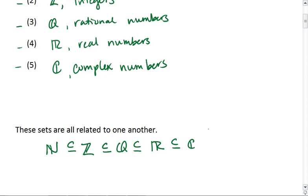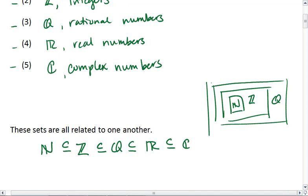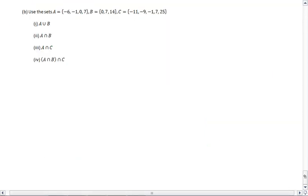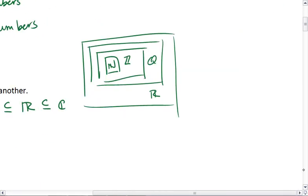Meaning, all of our natural numbers are also going to be integers, plus other numbers. All of our integers are also going to be rational numbers. All of our rational numbers will also be real numbers. And all of our real numbers will also be complex numbers.